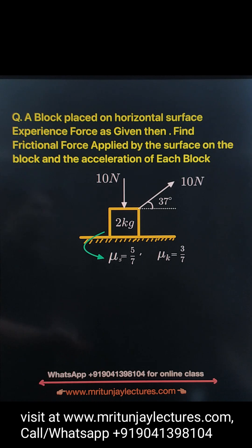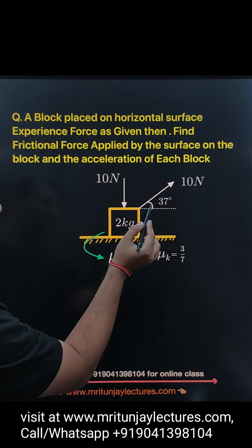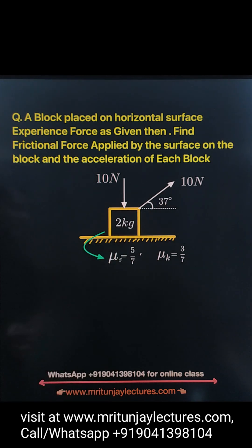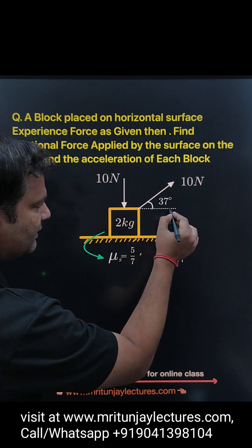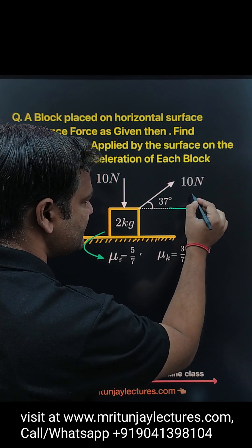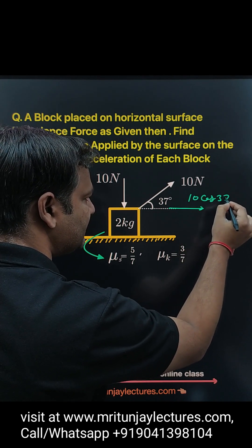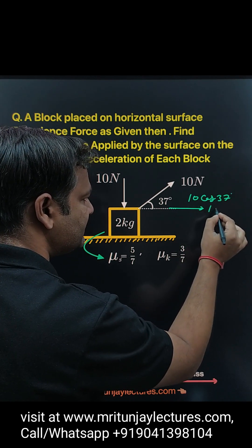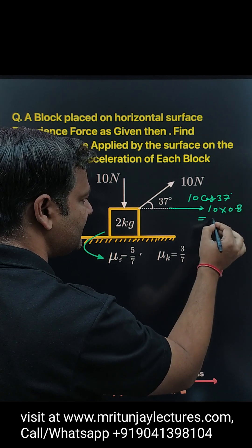First of all, look here. One force is 10 Newton downward, and here 10 Newton at 37 degrees with the horizontal. The component of 10 Newton along the horizontal direction is 10 cos 37, and 10 cos 37 equals 0.8, so that value is 8 Newton.